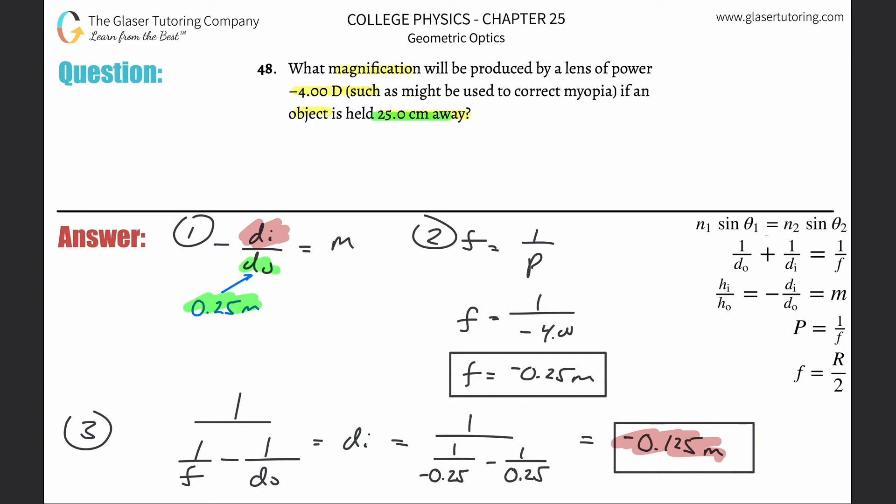I already know the object distance - that was given in the problem. So now we just plug it in and skip for joy. This is -(-0.125) divided by 0.25, which equals the magnification. It'll be positive overall. So negative divided by 0.25, and we get 0.5. The magnification halves it, so the image is smaller than the object by half.